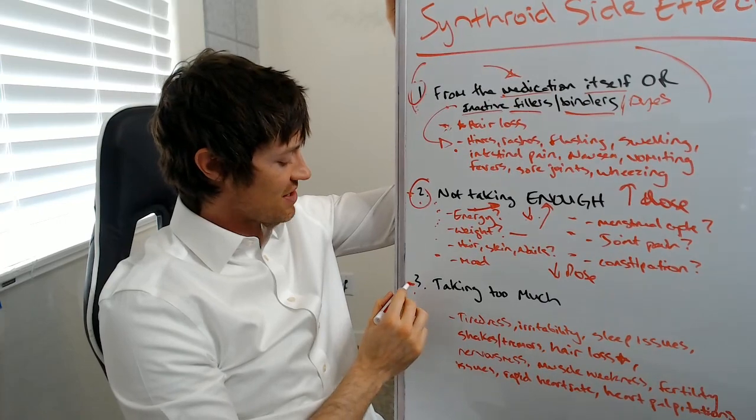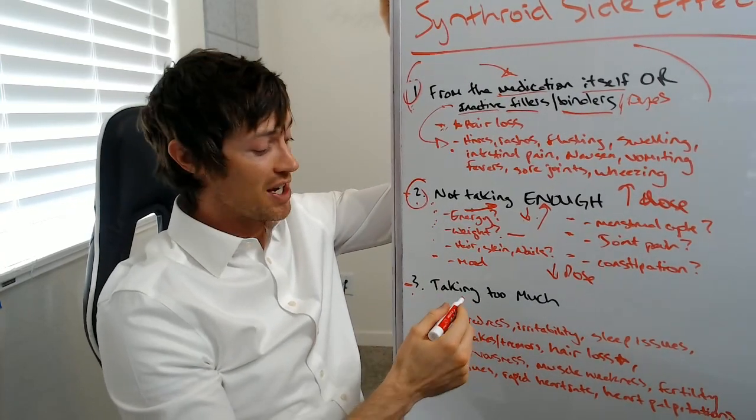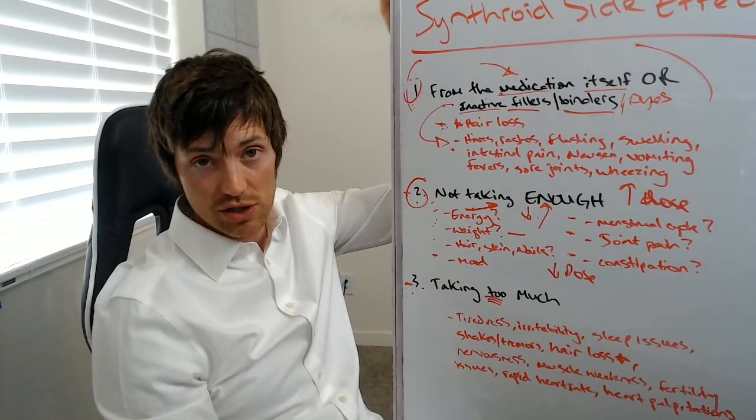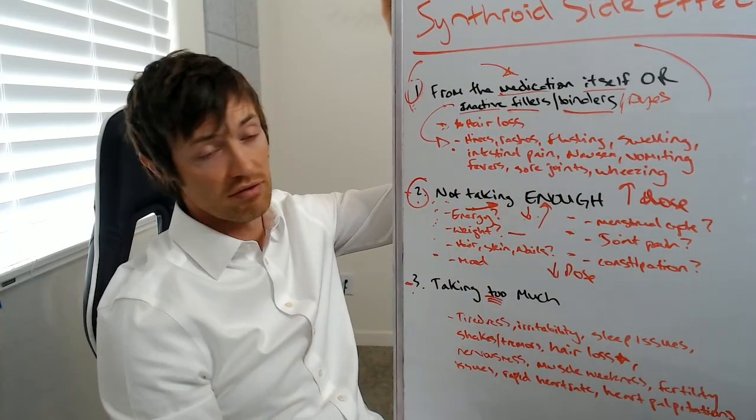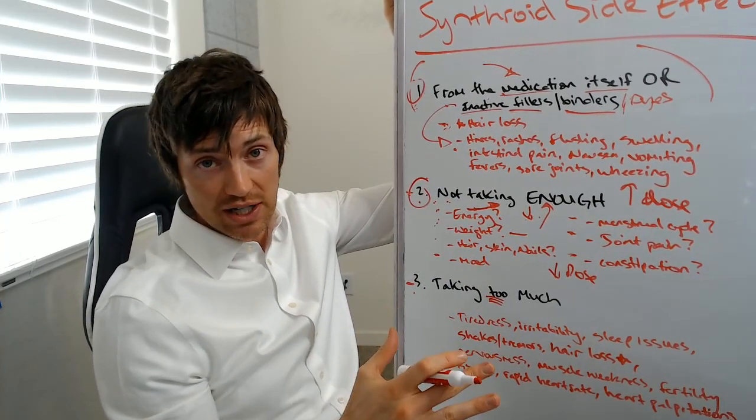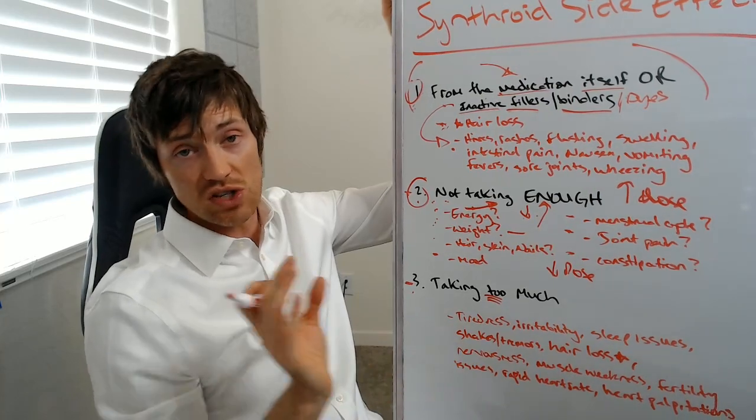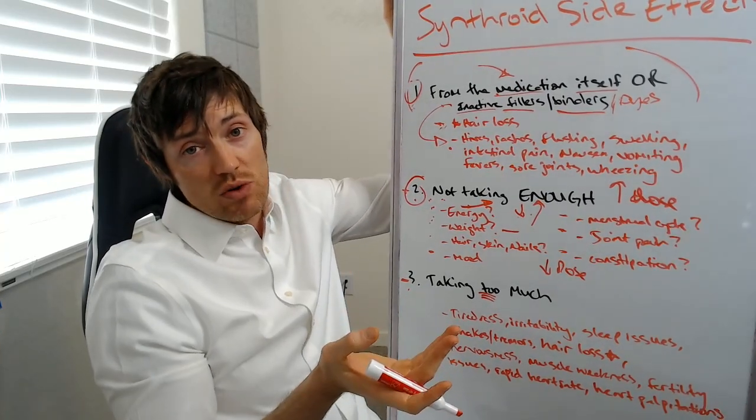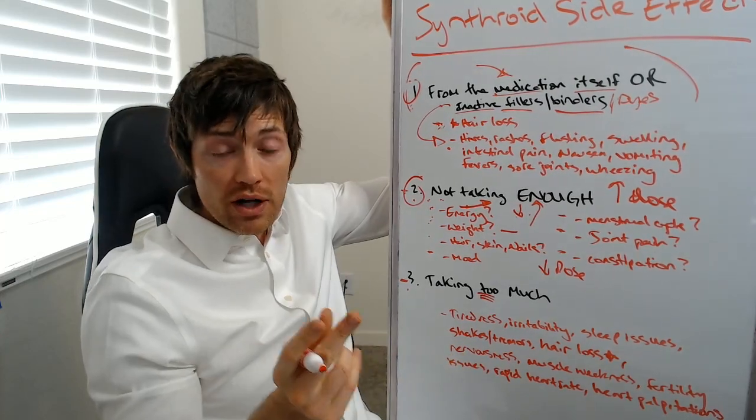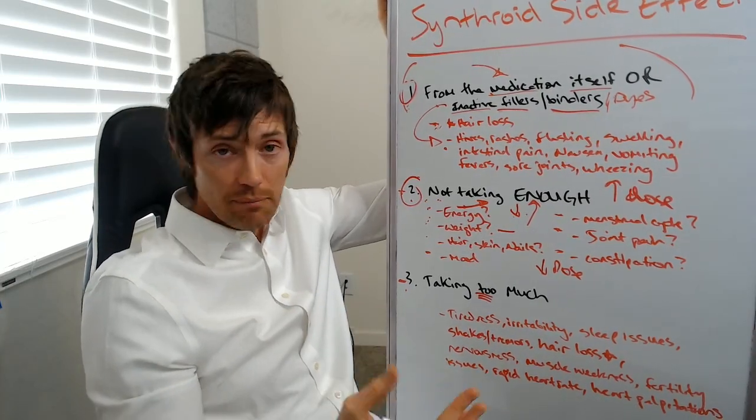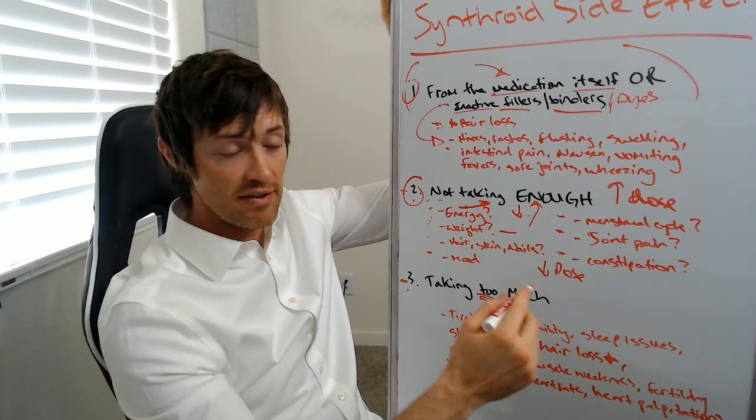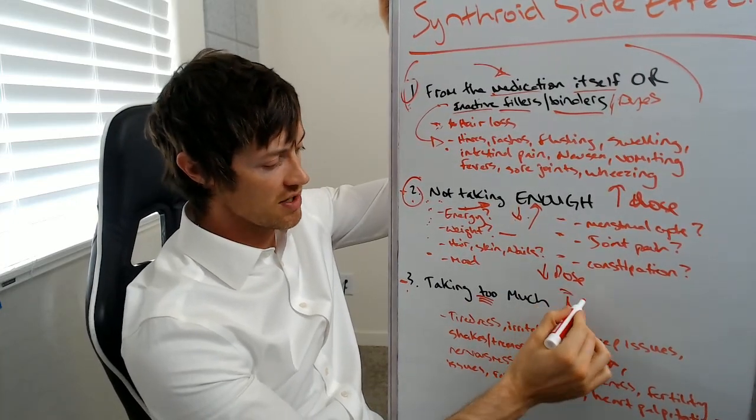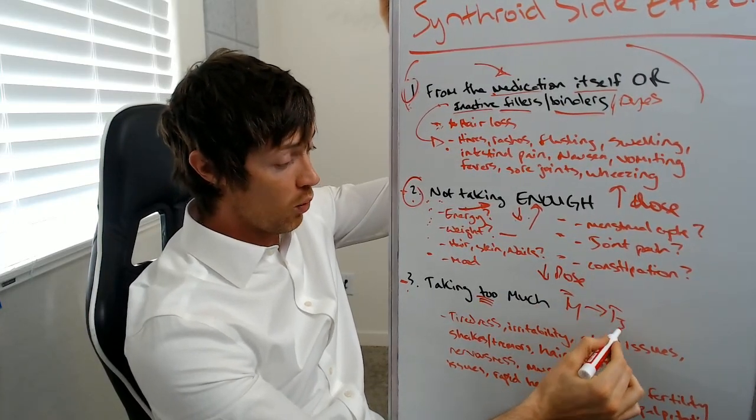The last section is you can also have side effects because you're simply taking too much. It's the exact opposite of not taking enough. Now it is very possible that Synthroid is the right thing for you. It's going to solve your problems. It's exactly what your body needs, but your doctor just gave you a dose that's a little bit too high, or you're really sensitive to it. Some people are what I call super converters. They take T4, which is what Synthroid is, and they turn it into T3 without any issues.